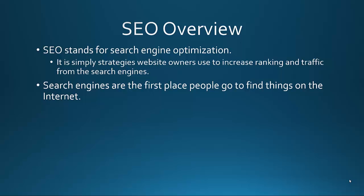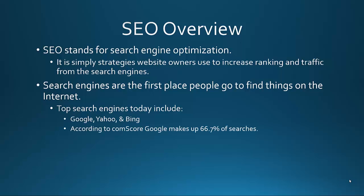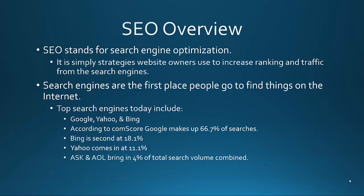Search engines are a very big part of the internet — people are always searching. Top search engines today are Google, Yahoo, and Bing. According to a ComScore report, Google makes up 66.7% of searches — roughly two-thirds of all searches run through Google. Bing comes in second at 18.1%, Yahoo at 11.1%, and the Ask and AOL search engines bring in 4% combined. Obviously, Google should be your focus, and if you can apply proper SEO techniques to rank in Google, you'll generally get results in Yahoo, Bing, and even smaller search engines like Ask and AOL.